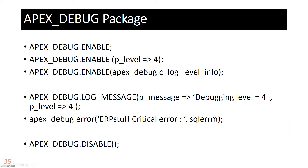The apex_debug package has different procedures. The first is enable — without any parameter it defaults to level four. You can also pass the parameter explicitly as level four. All three equivalent commands do the same thing.